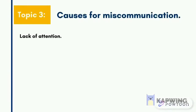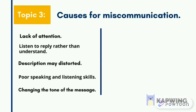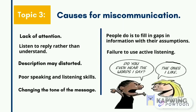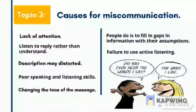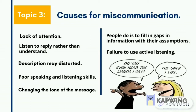Now let us know the causes for miscommunication. An important one is lack of attention — so many people think about something else while listening, which leads to miscommunication. Some people don't check whether they are being understood correctly or correctly understanding someone. Many people listen to reply rather than to understand. Sometimes descriptions may be distorted because communicators cannot remember all the details shared, could not hear properly, or the speaker did not speak clearly. People also tend to act on their own interpretation when passing on a message, changing the tone. Another cause is filling in gaps with their own assumptions. Failure to use active listening also causes miscommunication.